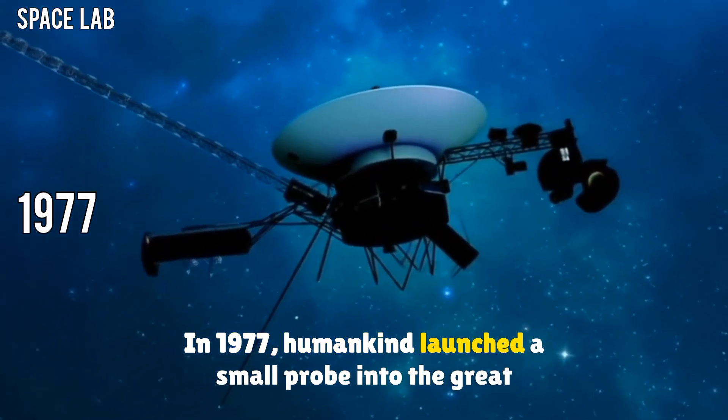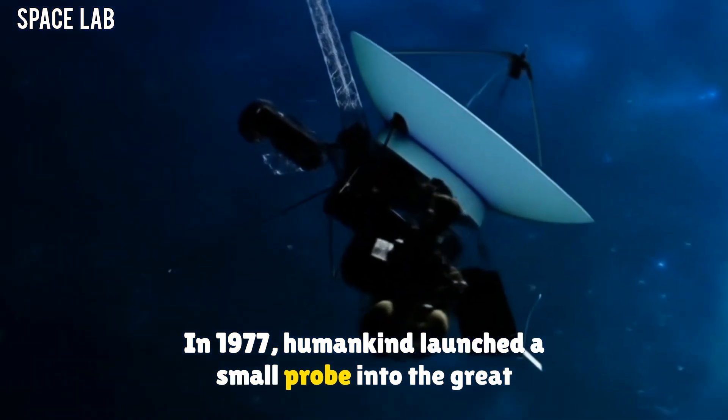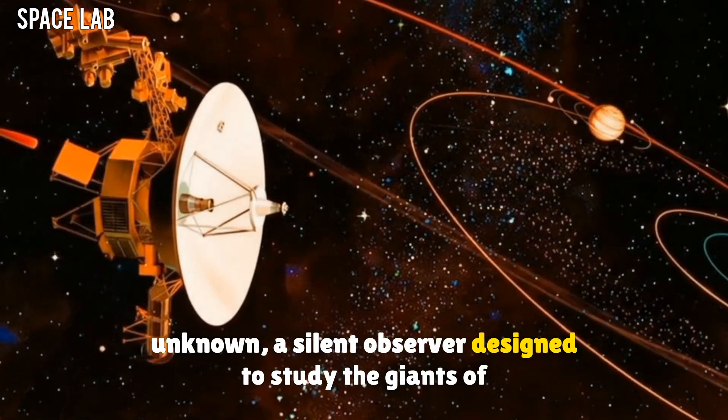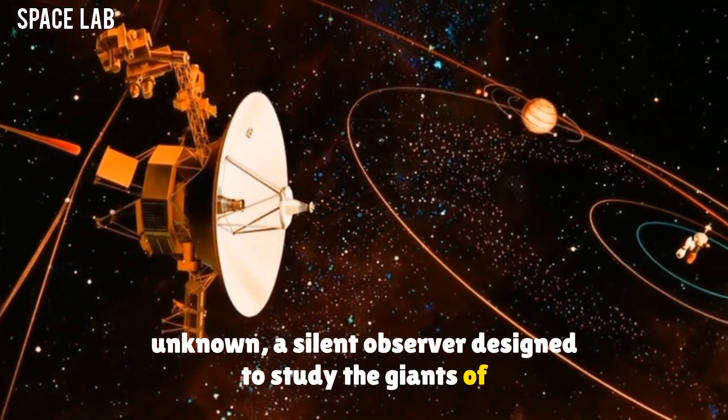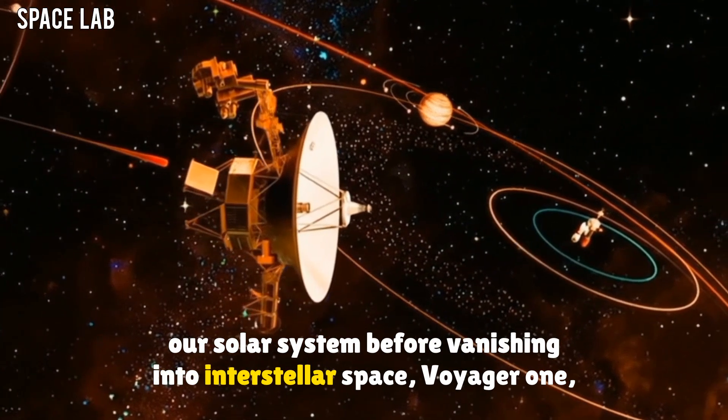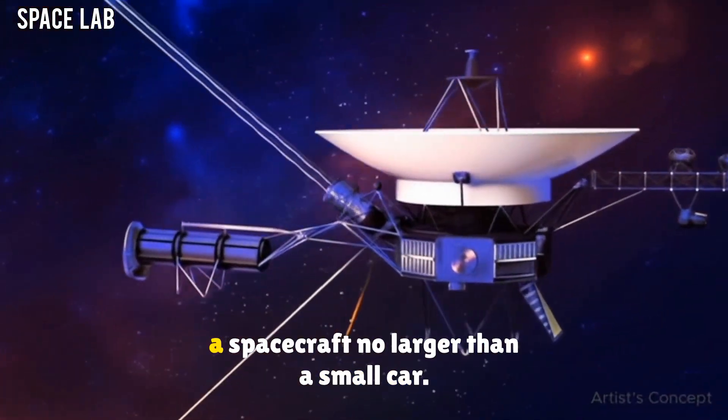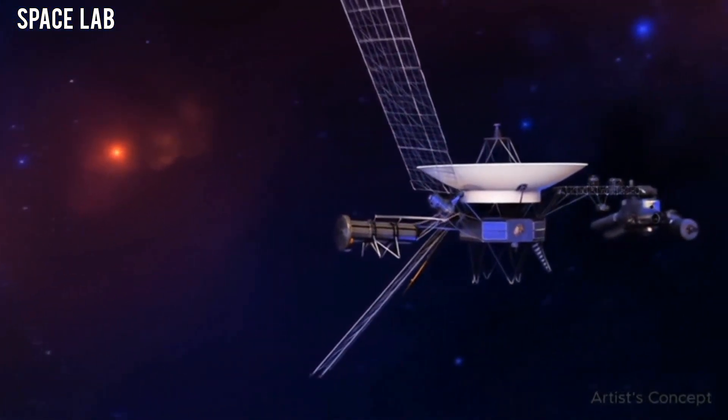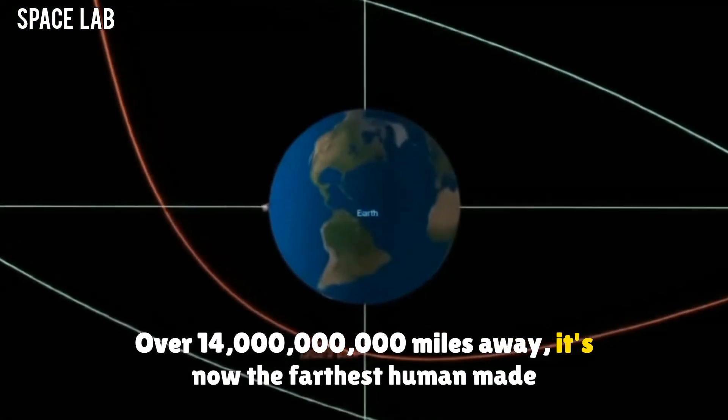In 1977, humankind launched a small probe into the great unknown, a silent observer designed to study the giants of our solar system before vanishing into interstellar space. Voyager 1, a spacecraft no larger than a small car.